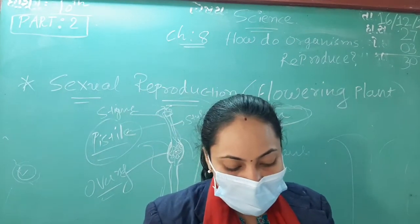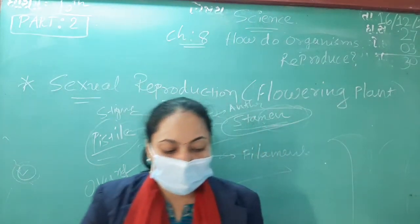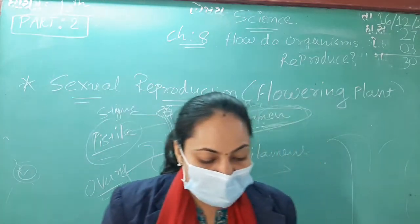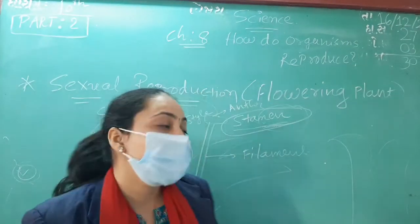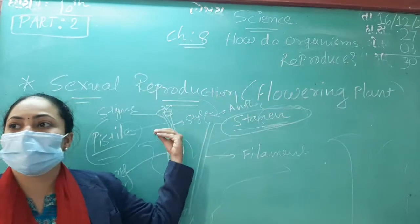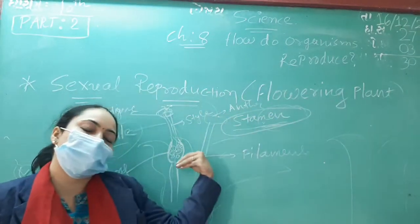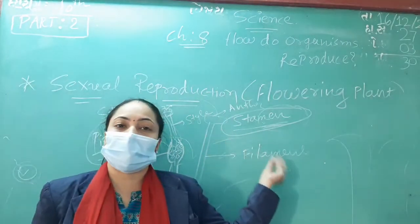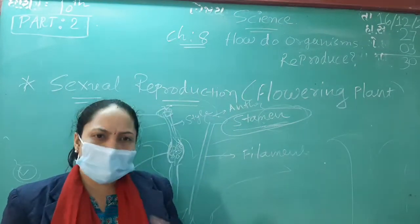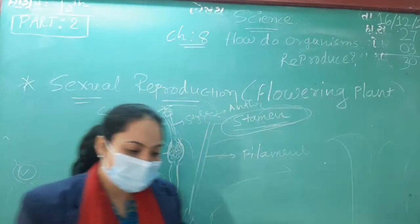If the pollen is transferred from one flower to another, it is known as cross-pollination. This transfer of pollen from one flower to another flower is achieved by agents like wind, water, and animals. An insect may carry pollen from one flower to another, or if a plant is in water, the pollen is transferred through water. After the pollen lands on a suitable stigma, it has to reach the female germ cells which are in the ovary. For this, a tube grows out of the pollen grain and travels through the style to reach the ovary.